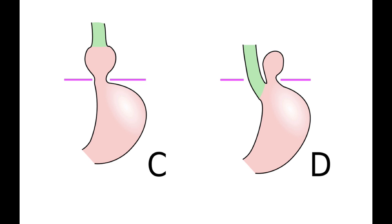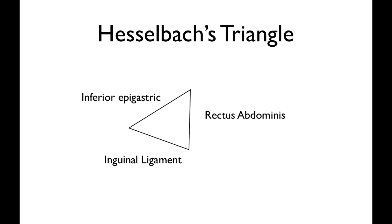Hesselbach's triangle: the anatomical landmarks are the rectus abdominis, the lateral wall of that which is where your six-pack would be, and then the inguinal ligament, which runs from the anterior superior iliac spine to the pubic tubercle. The inferior epigastric vessels form the third border. If it goes into this triangle, it's a direct hernia through the transversalis fascia, more common in old people, and by definition it would be medial to the inferior epigastric.